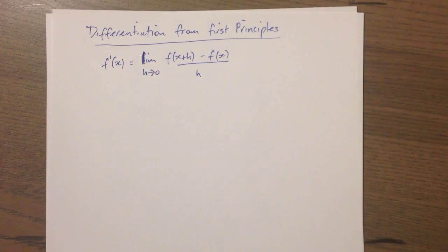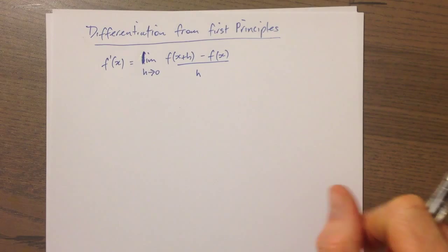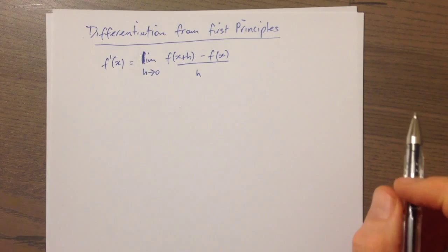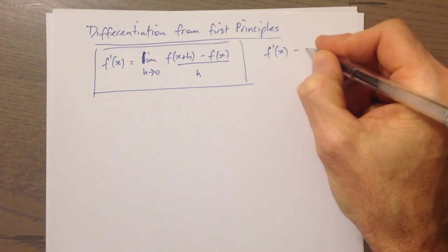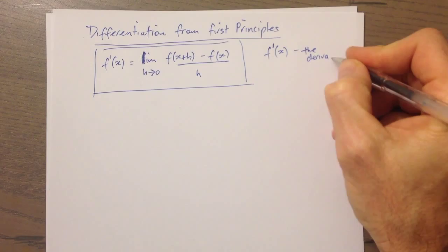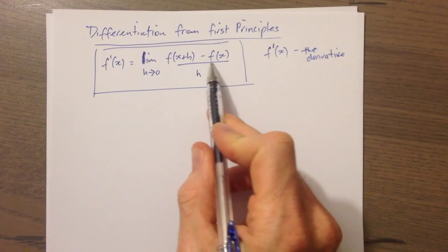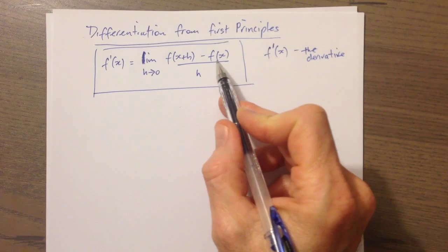That's the main formula we use for differentiation from first principles. Now let's see where this comes from — really all it is is a variation on the gradient formula. And over here, this is the symbol for the derivative. F dash, or f prime, is what we call it. You'll notice we're using f of x function notation — if this is a bit intimidating, just think of it as y.